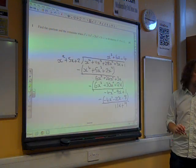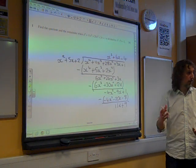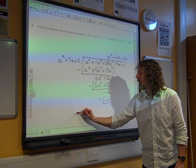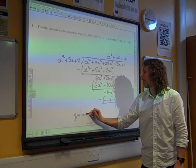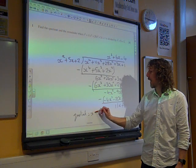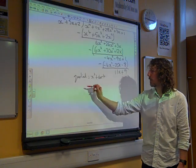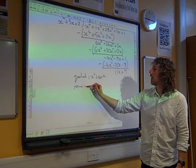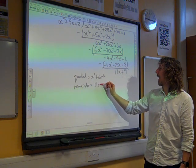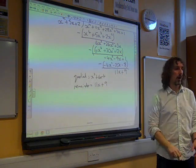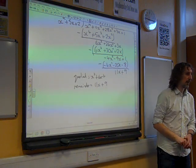And that is, the question says, find the quotient and remainder. So if we're going to be super rigorous about this, we're going to say the quotient is x squared plus 6x minus 4. And the remainder is 11x plus 9. And that's that.